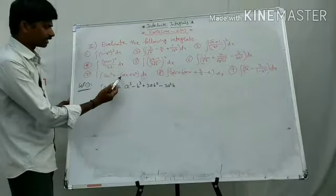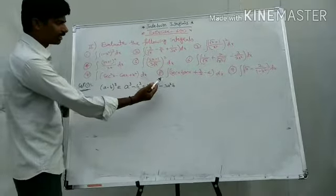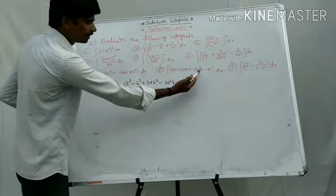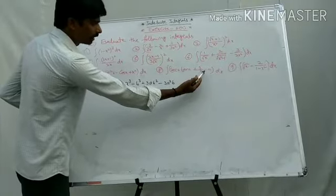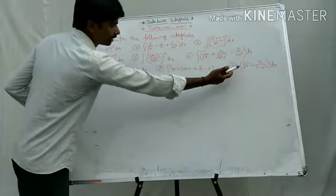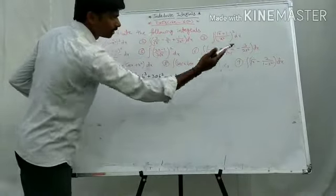Seventh one: integral of (secant squared x minus cos x plus x squared) dx. Eighth one: integral of (secant x tan x plus 3 by x minus 4) dx. Ninth one: integral of (root x minus 2 by (1 minus x squared)) dx.